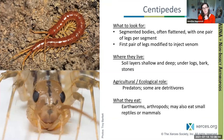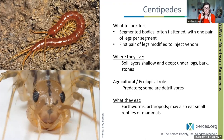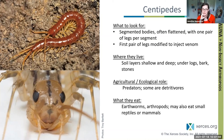Similar to millipedes, centipedes have segmented elongated bodies, but they're a bit more flat and have only one pair of legs per segment. Unlike millipedes, centipedes are predatory — they have a first pair of legs modified into pincers that inject venom into prey to freeze it before eating. They're very fast runners, most active around dusk or at night, and will eat animals as large as earthworms, reptiles, amphibians, or small mammals. Some will bite people if handled.